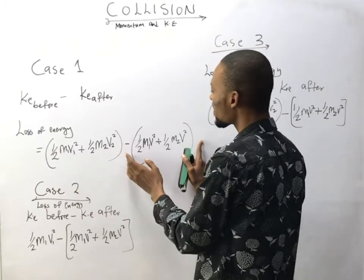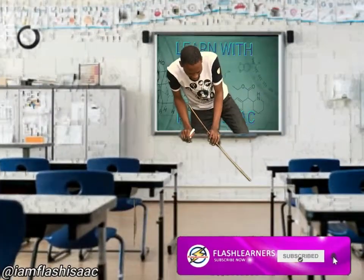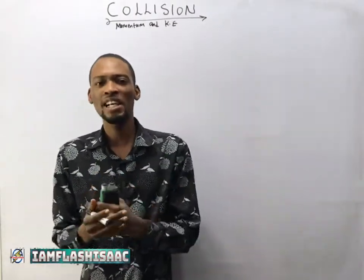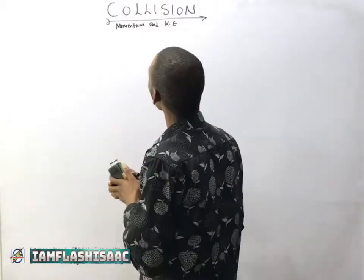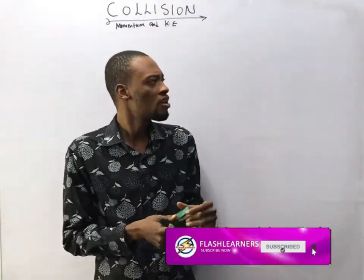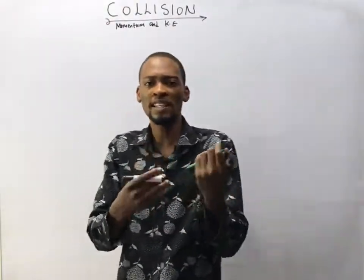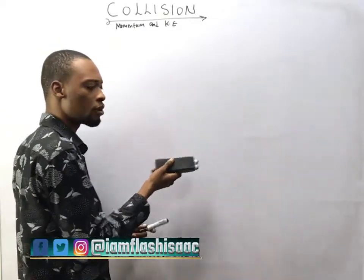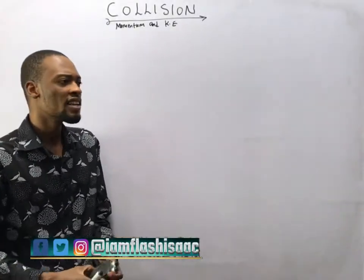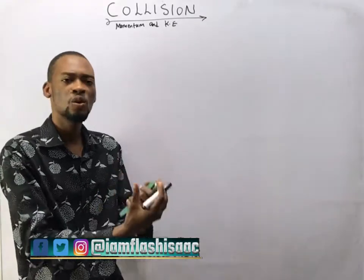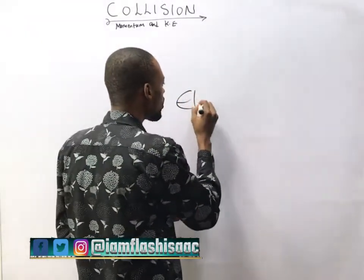Hello guys, I am Flash Isaac and welcome to my physics class. Today I'll be taking you through collision and what happens to momentum and kinetic energy before and after collision. What is collision? Collision is simply a phenomenon that occurs when two bodies come in contact — for example, if I hit something on the board, bounce a ball on the floor, or a car hits a wall. Collision can be elastic or inelastic.